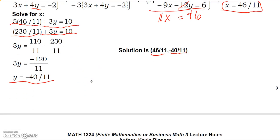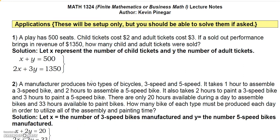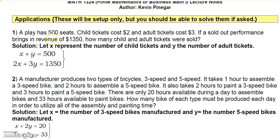That shows the numbers don't always have to be integers. Here's another example: a play has 500 seats. Child tickets cost $2 and adult tickets cost $3. A sold-out performance brings in $13.50 in revenue. How many child and adult tickets were sold? You'll sell a total of 500 tickets, so X plus Y equals 500. The total revenue equation is 2X plus 3Y equals 13.50.